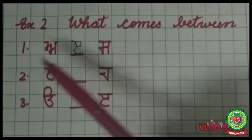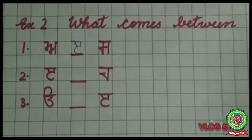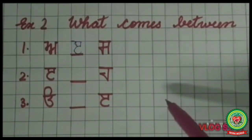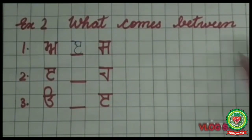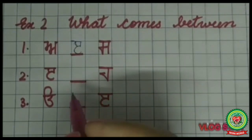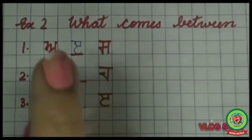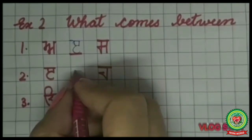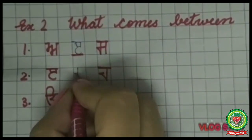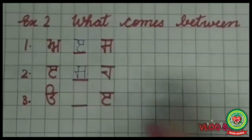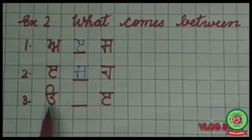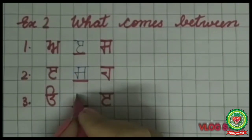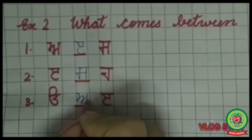The second one is: Edi, blank, Haha. Read the sequence in your mind — Oda, Aira, Edi, Sassa, Haha — so the answer is Sassa. The next one is: what comes between Oda and Edi? I will write Aira here.